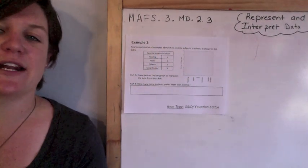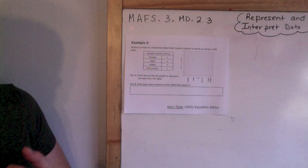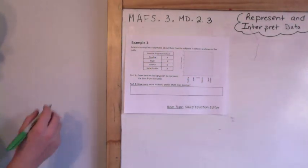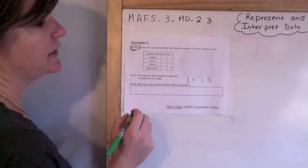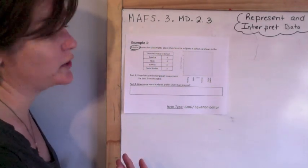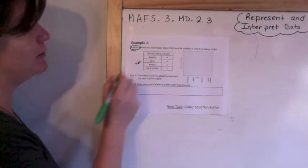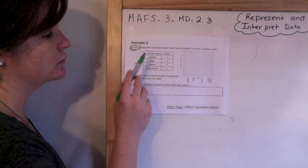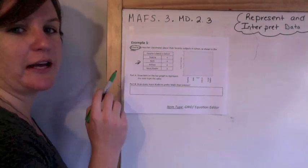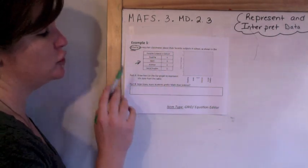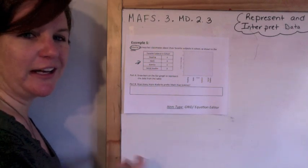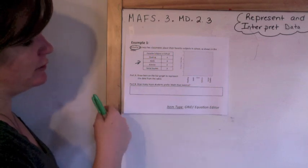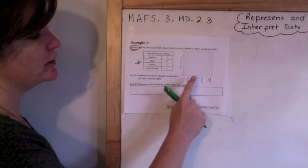This is example one. Ariana surveys her classmates about their favorite subject in school, as shown in the table. It says favorite subjects in school: reading four people, math nine people, science two people, and social studies three people.